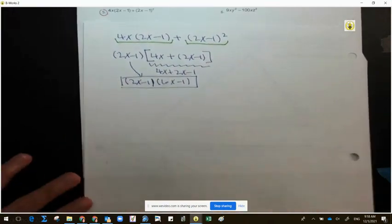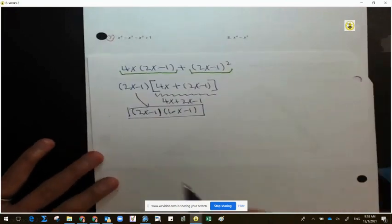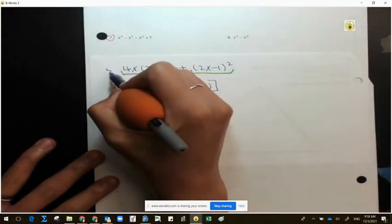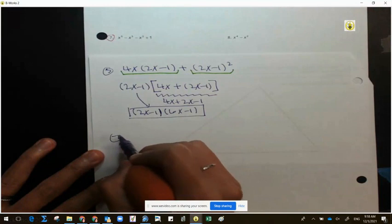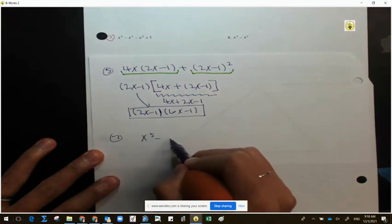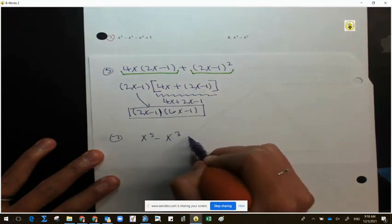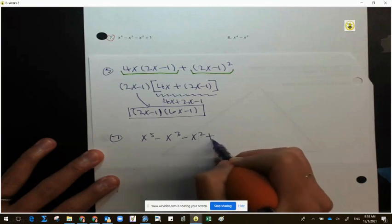Let's now go over number 7. On number 7, it says we have, this is number 5, and that's 7, x to the 5th minus x to the 3rd minus x squared plus 1.